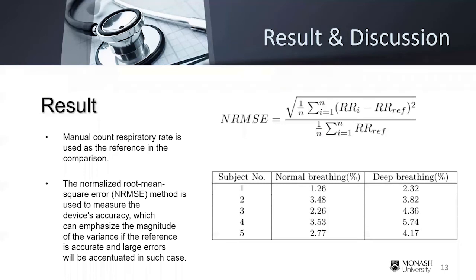Manual count respiratory rate is used as a reference in the comparison. We are using the normalized root-mean-square-error method to measure the accuracy of the device, and this method can emphasize the magnitude of the variance. We have implemented five experiments for five different subjects. All NRMSE is shown in the table at the right side. The maximum error is 5.74% for the deep breathing for subject 4. In terms of the respiration per minute, the average difference between the estimation and the manual count is less than one beat per minute.